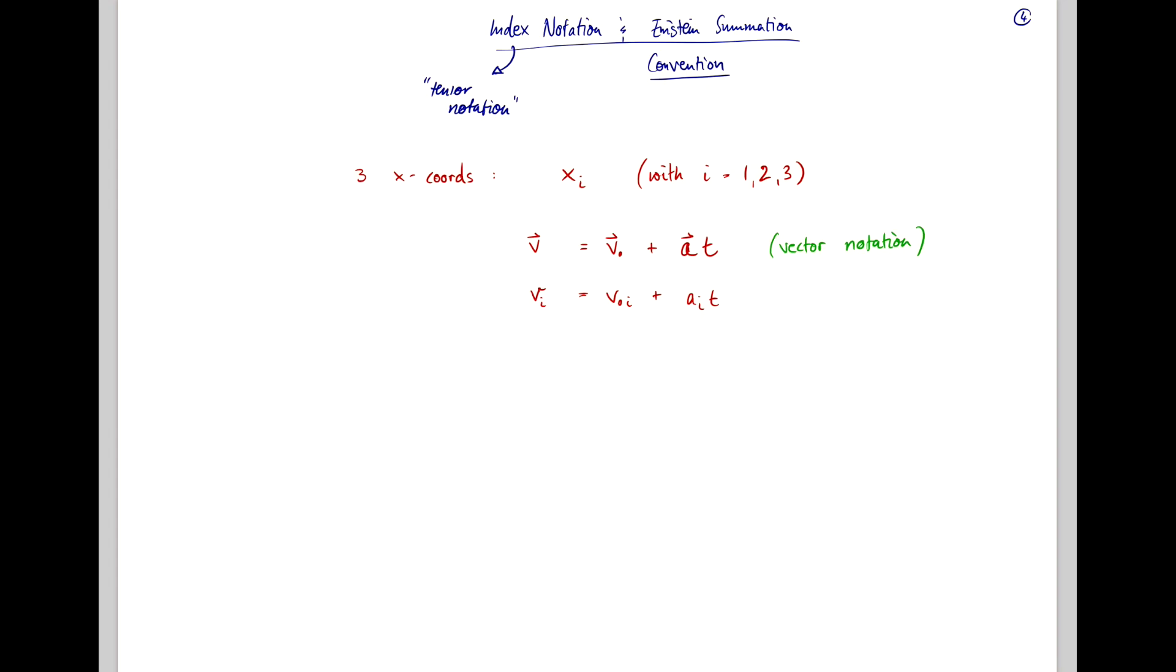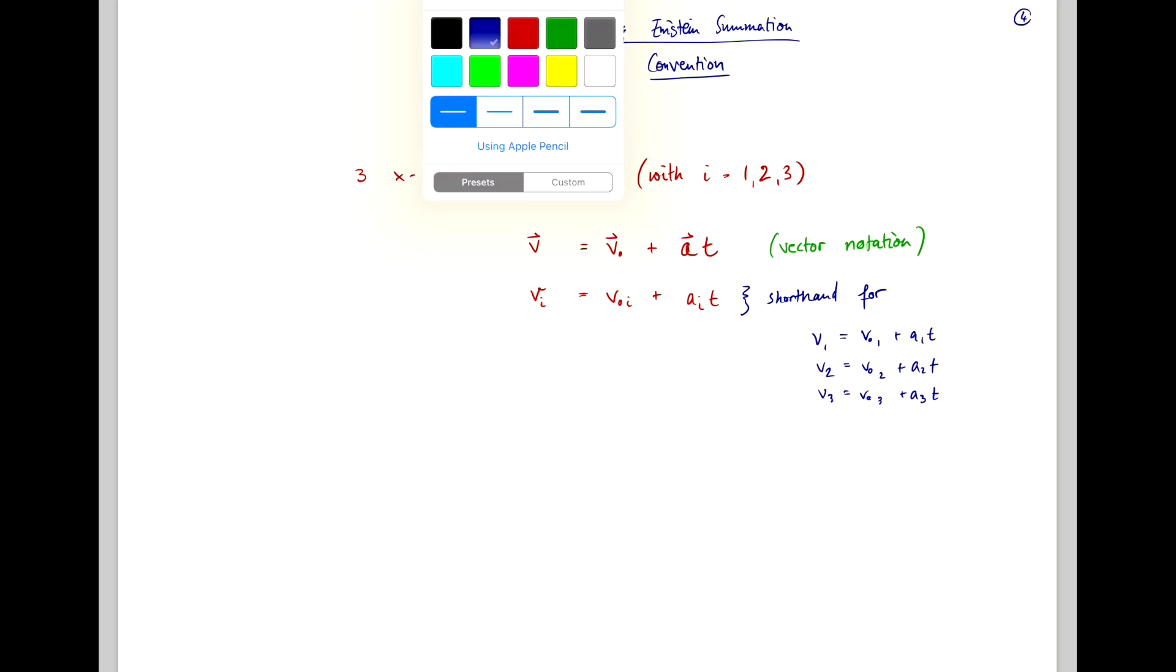So, this really here, both of these are just shorthand for three equations, namely v1 equals v01 plus a1t. So, both of those notations, the vector notation or the tensor notation, are shorthand for these three algebraic equations.